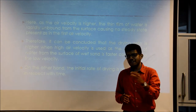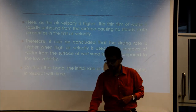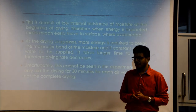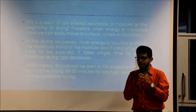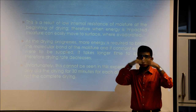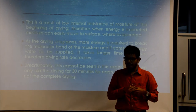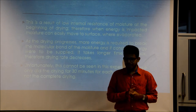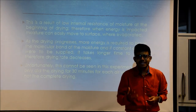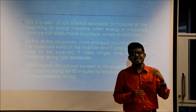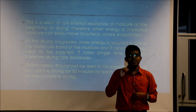What we can conclude is that more air velocity means faster drying. On the other hand, the initial rate of drying is much higher at the beginning due to low internal resistance of moisture. When energy is applied, moisture can easily move to the surface and evaporate. As drying progresses, more energy is required to break the molecular bonds of the moisture, and if constant energy is supplied, it takes longer to break those bonds. Therefore, the drying rate decreases over time.